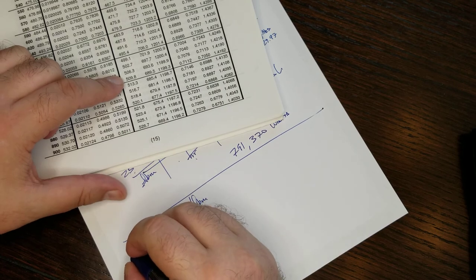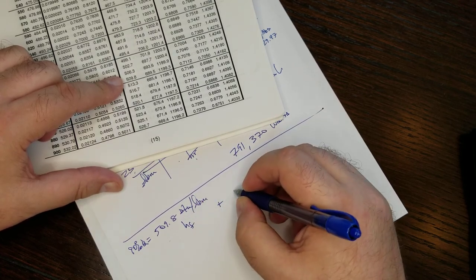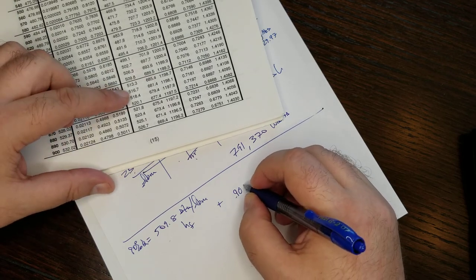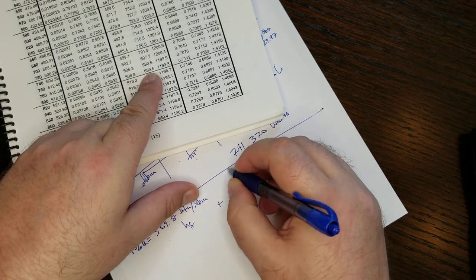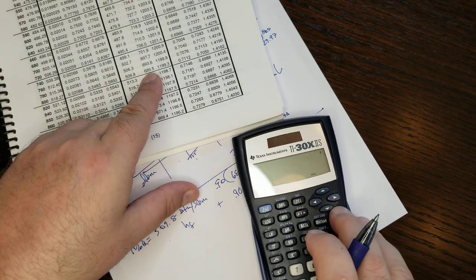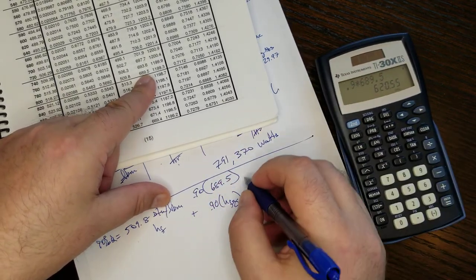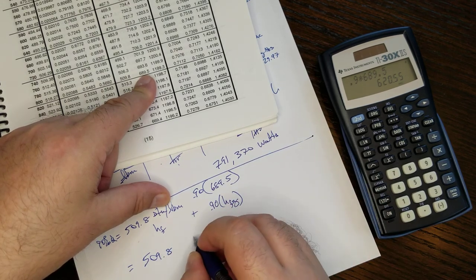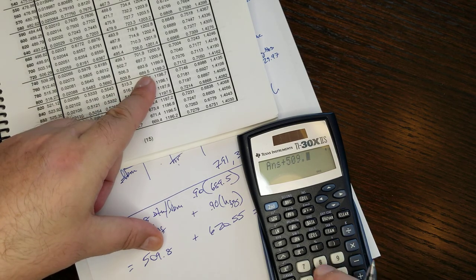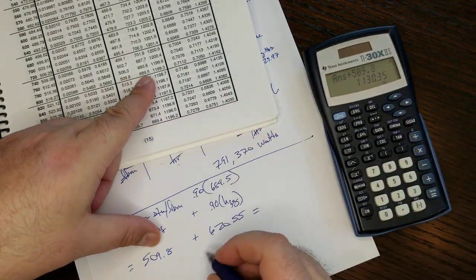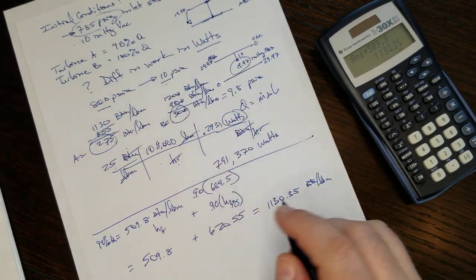So 800 PSIA has an H sub F of 509 BTUs per pound mass. But the actual enthalpy of 90% quality is that initial H sub F plus 90% times H sub FG. So 800 PSIA, 689.5, 90% of that is 0.9 times 689.5 equals 620.55. 509.8 plus 620.55 equals 1130.35 BTUs per pound mass.